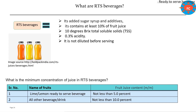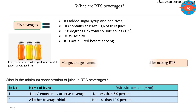In RTS fruit juice beverages, the minimum fruit content requirement for citrus fruits is not less than 5%, and for remaining other fruits not less than 10% Brix content. The RTS beverages include mango, orange, lemon, lime, pear, kiwi, and apricots.